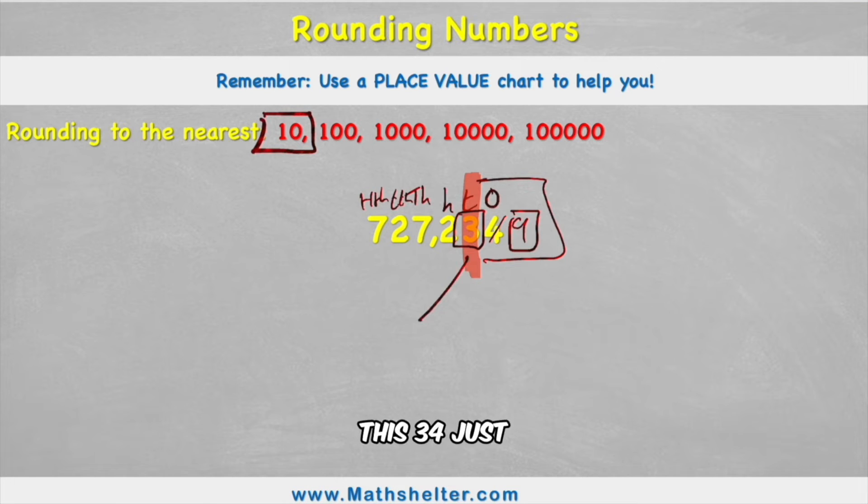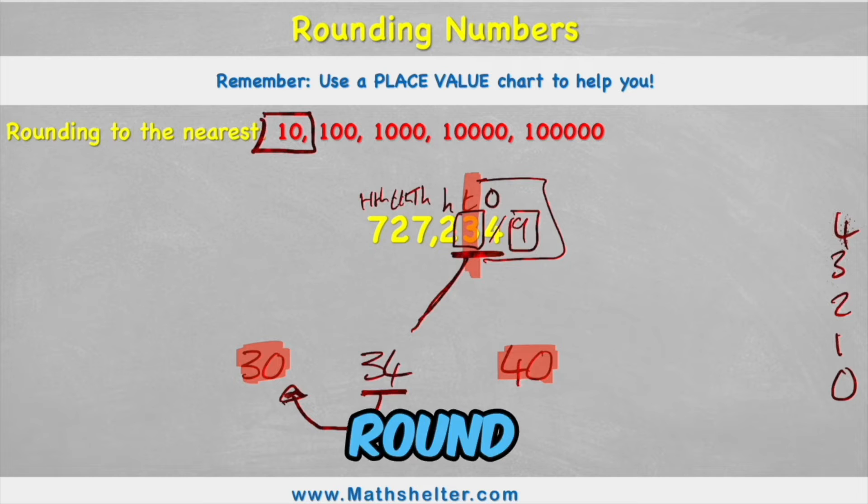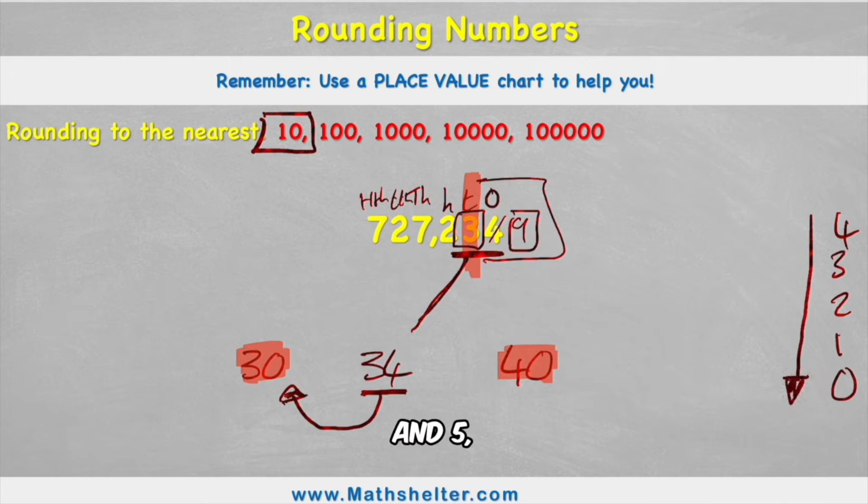Because if we think about this 34 just here, 34 sits in the middle of 30 and 40. So when we're rounding to the nearest 10 my two tens that I could round to are going to either be 30 or 40. And my job is to find out which one is closer to 34. Well we should be able to see that 34 is closer to 30 but luckily we have a little rhyme for us as well. We can say that 0, 1, 2, 3, 4 round down to the floor and 5, 6, 7, 8, 9 round up all the time.